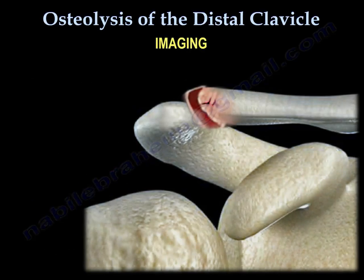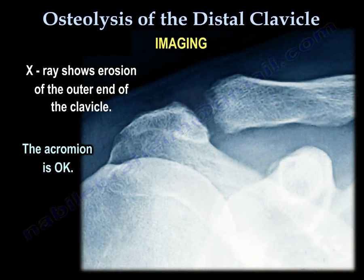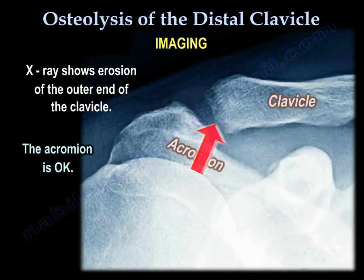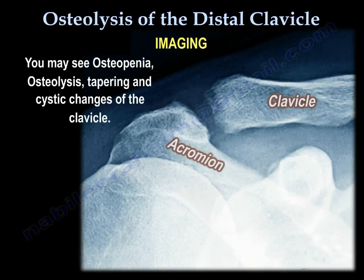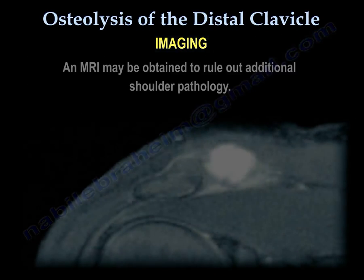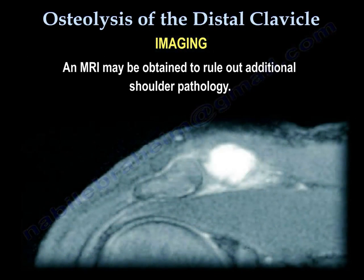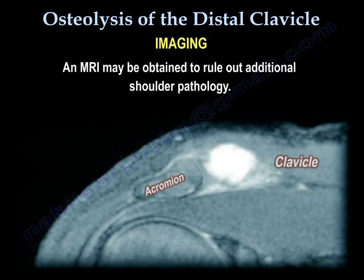On imaging, X-ray shows erosion of the outer end of the clavicle while the acromion is normal. You may see osteopenia, osteolysis, tapering, and cystic changes of the clavicle. An MRI may be obtained to rule out additional shoulder pathology and will show high signal in the distal clavicle.